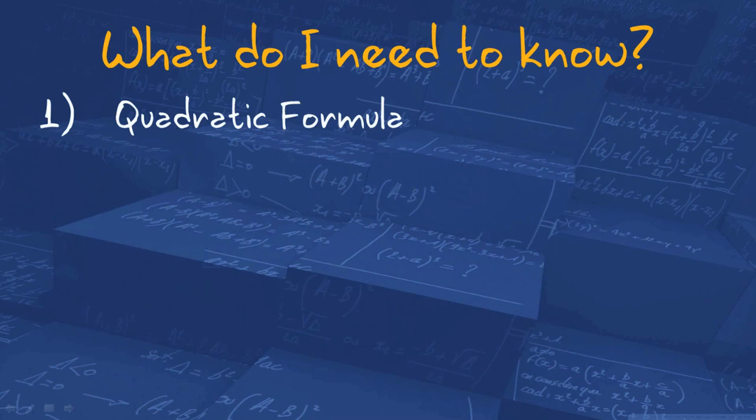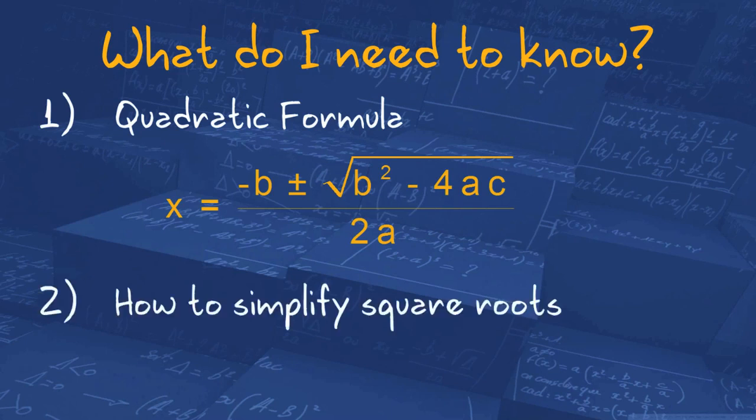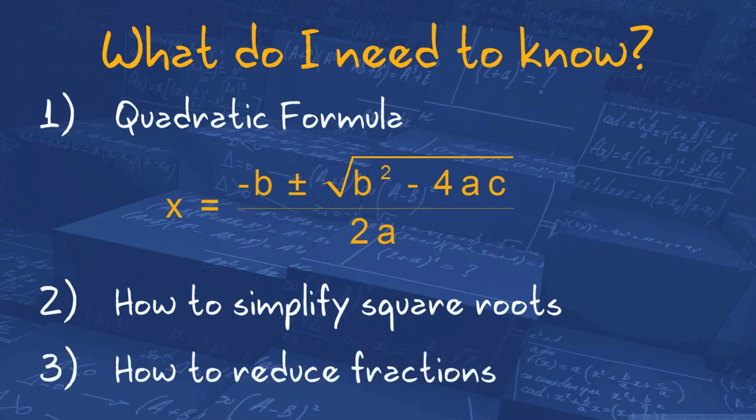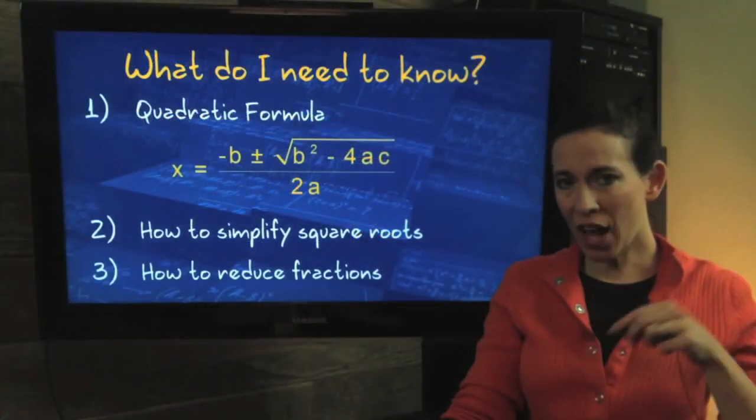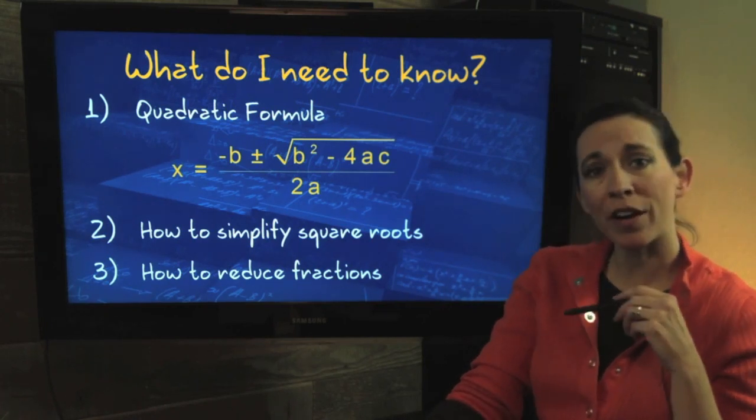First of all, you need to know the quadratic formula. So x equals the opposite of b plus or minus the square root of b squared minus 4ac all over 2a. In a minute, I'll explain to you where all those little a's, b's, and c's come from. We also need to know how to simplify square roots and how to reduce fractions.